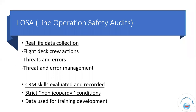So what are line operations safety audits? It is a real-life data collection method where training provides actual real-life scenarios to pilots, and observers monitor how the pilot handles those situations. The flight deck crew operations, threats, and errors are monitored to see how those threats and errors can be managed. CRM skills evaluates and records the actions taken by pilots, suggests corrections, and uses previous data for training development so that pilots will not repeat the same errors in the future.